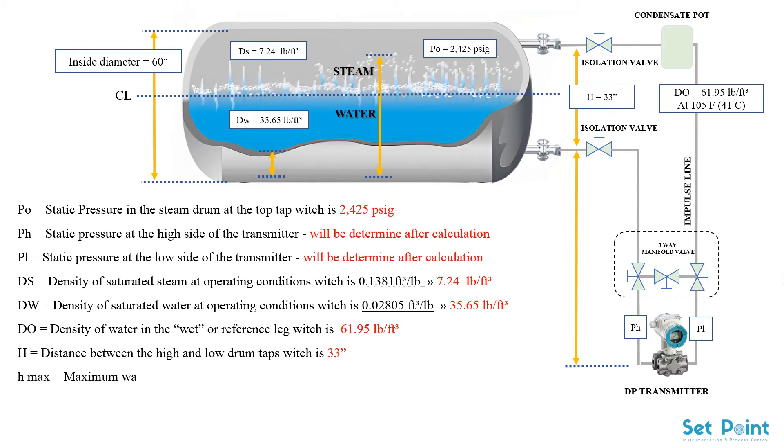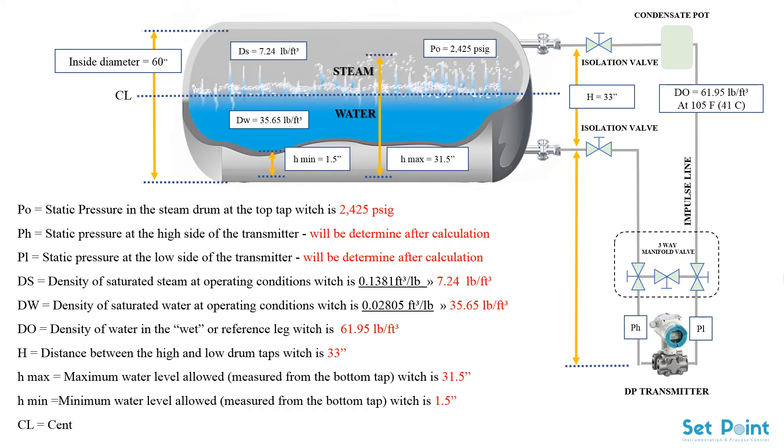Hmax equals maximum water level allowed which is 31.5 inches. Hmin equals minimum water level allowed which is 1.5 inches. CL equals center line of the steam drum. And V equals vertical distance from the bottom tap to the transmitter.